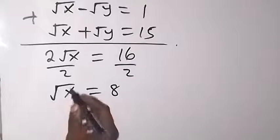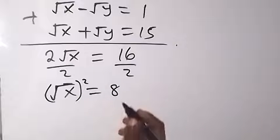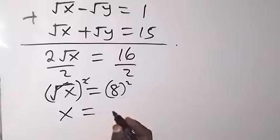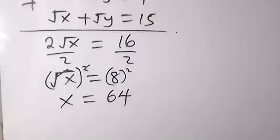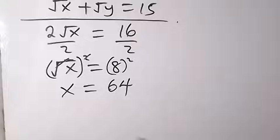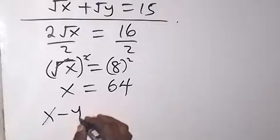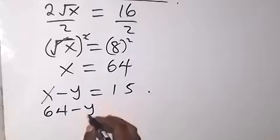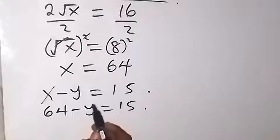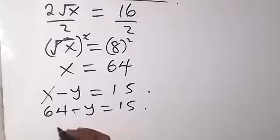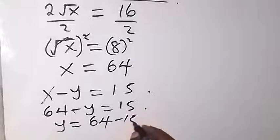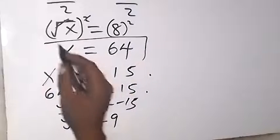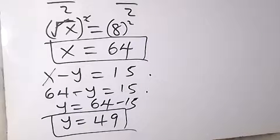Dividing both sides by 2, root x equals 8. Since we are looking for x, let's square both sides — square cancels square root — and x equals 8 squared, which is 64. To get y, from equation 2: x minus y equals 15, so 64 minus y equals 15, therefore y equals 64 minus 15, which is 49.